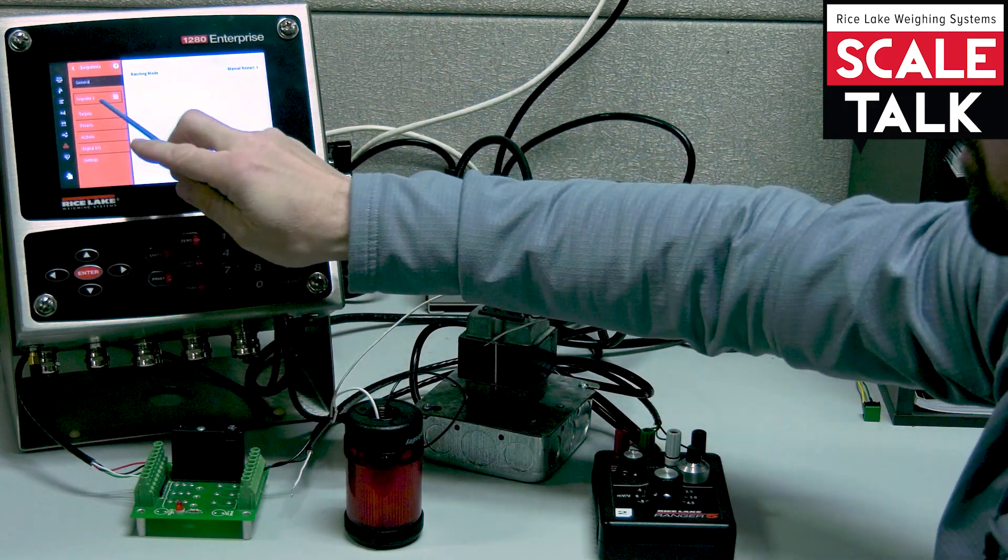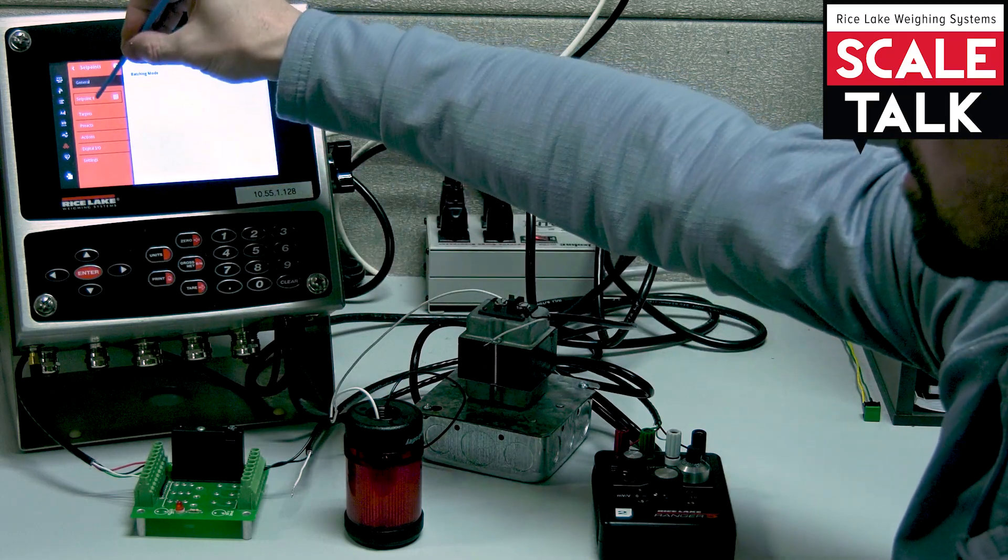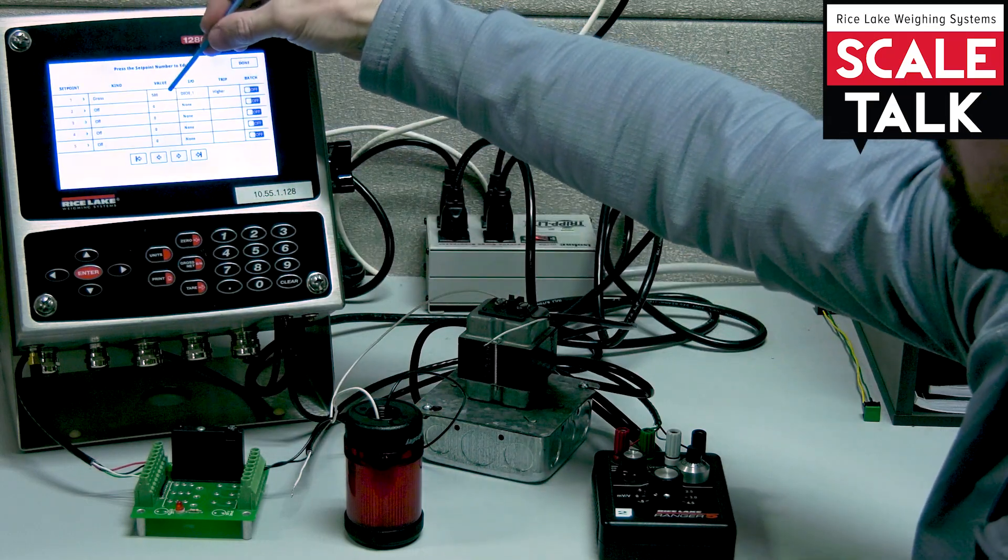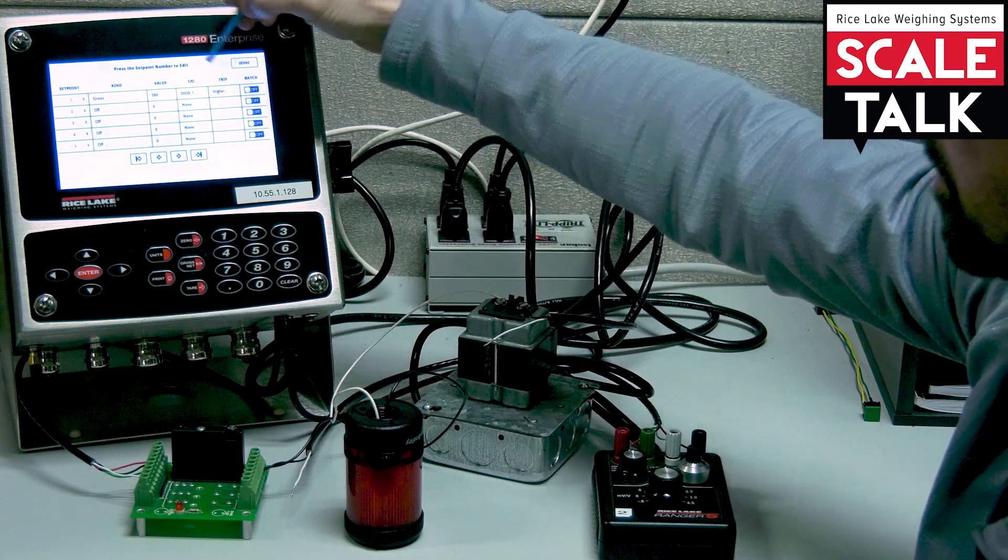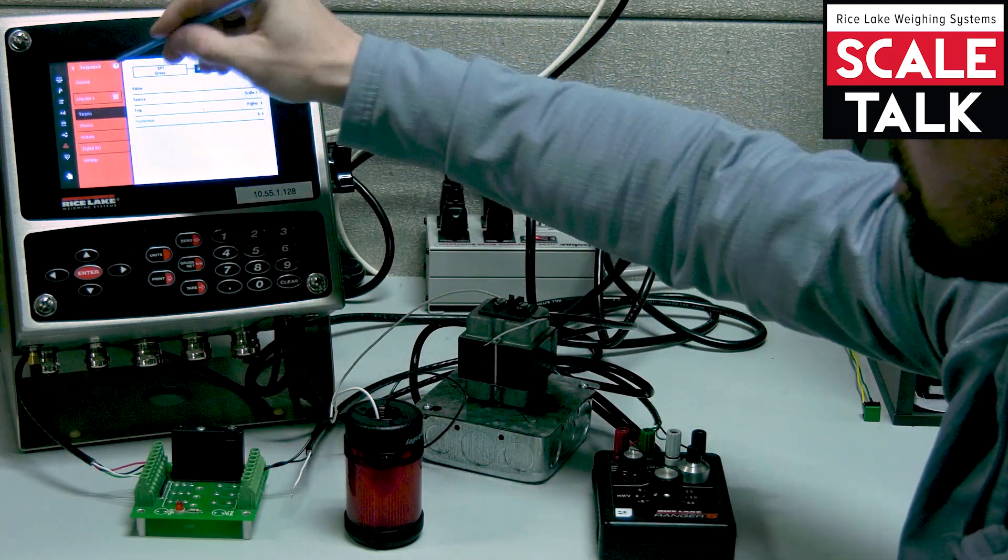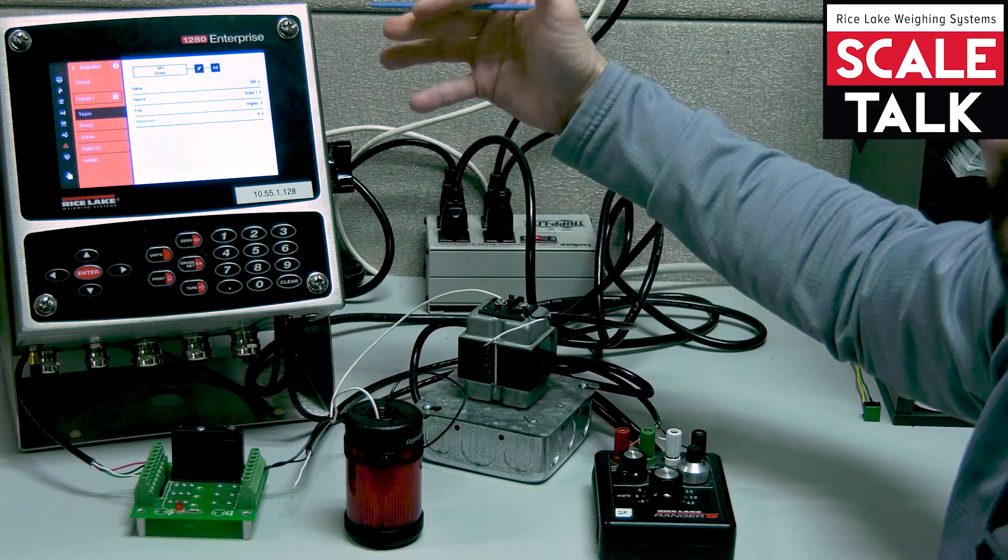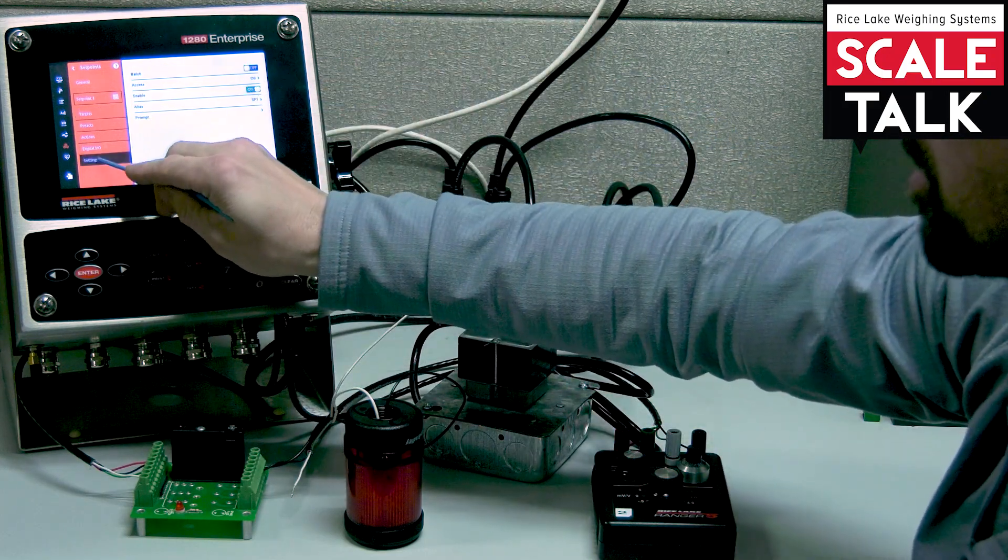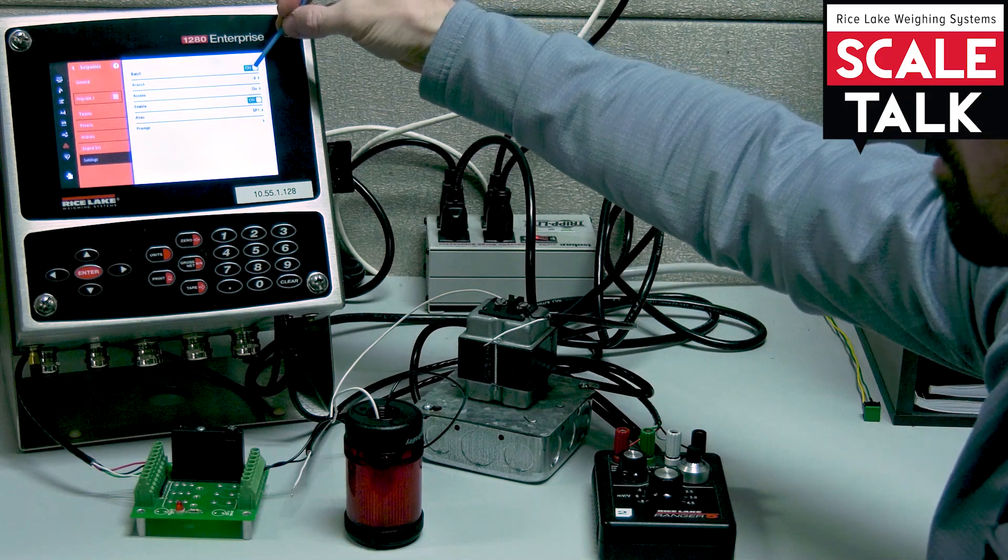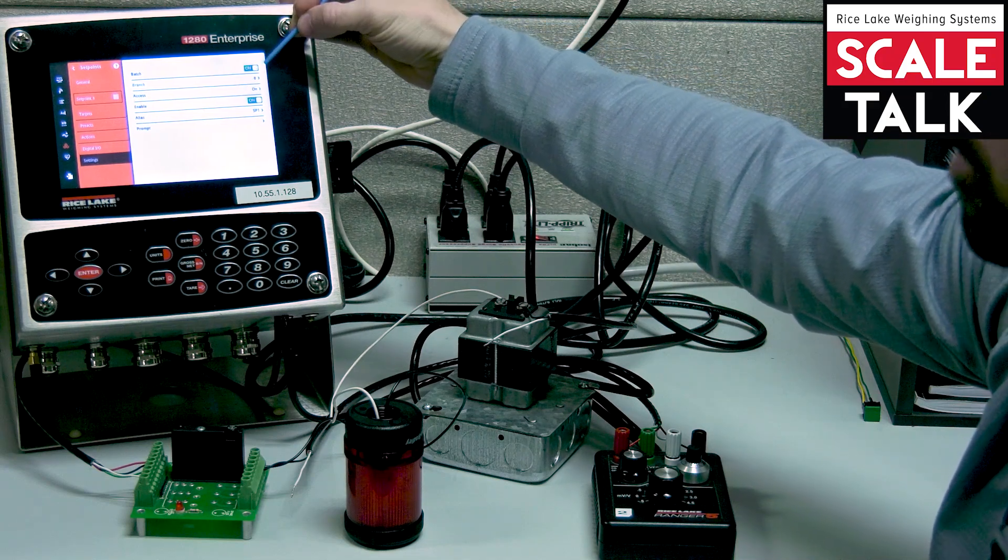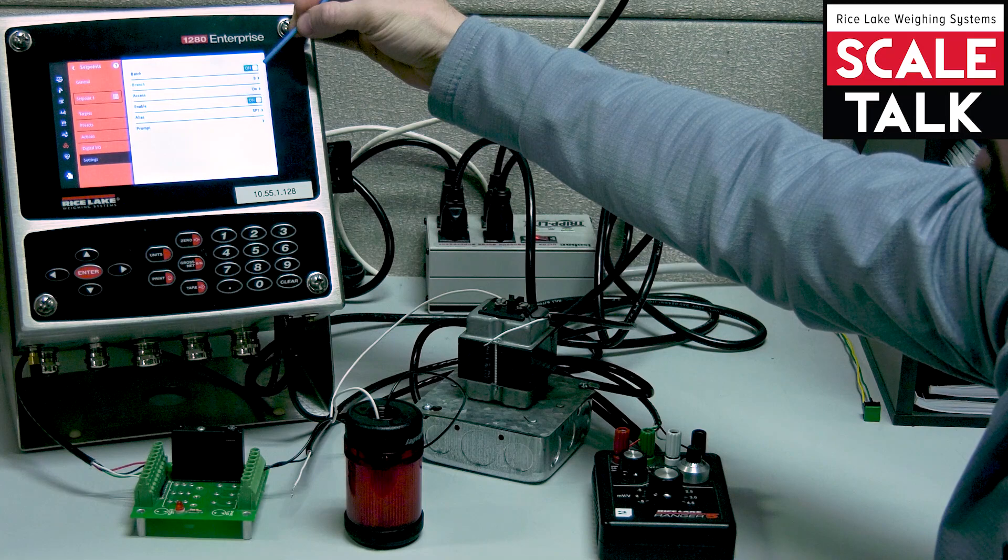For my first set point, I'm not going to change anything. We're going to leave this set at 500 pounds with digital i01 to trip higher. But we're going to make sure that even though we've turned on the batching mode, we need to make sure in our settings that this particular set point is to be included in the routine. So we're going to turn that on here as well.